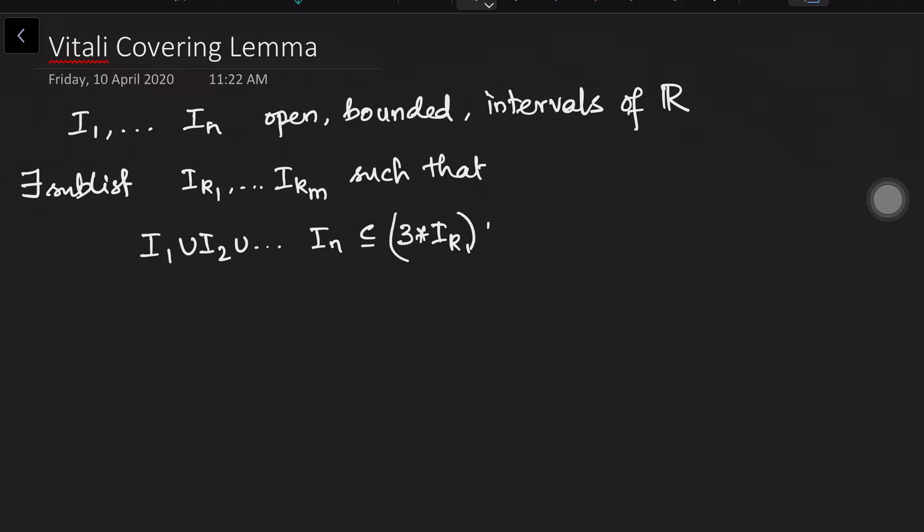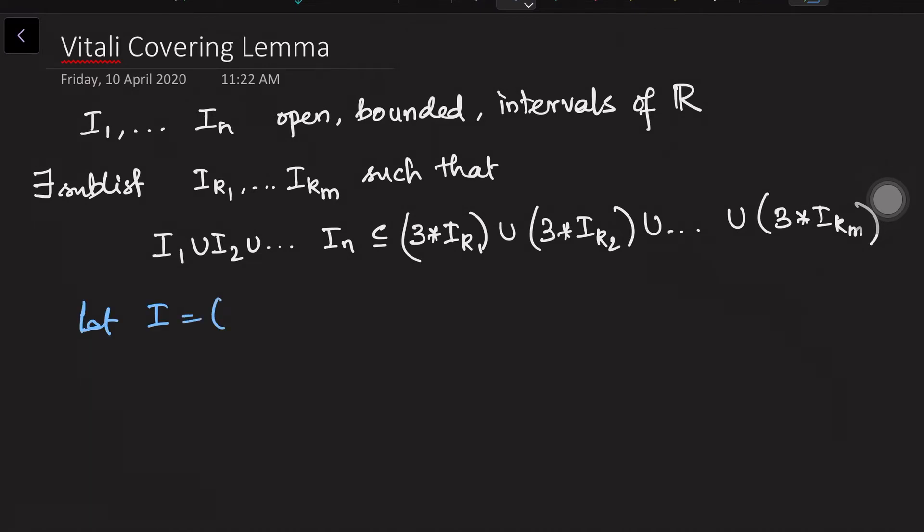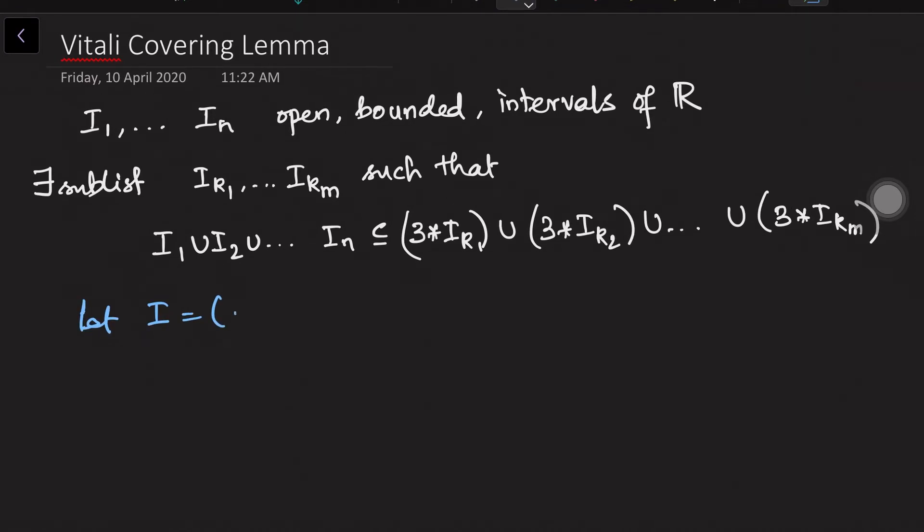what is this notation 3 times i_k1? First let us understand that suppose some interval is something like a and b, then 3 times i is, you find out the middle point of this. So this is a and this is b,